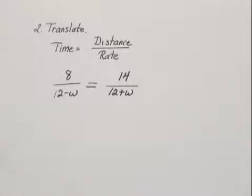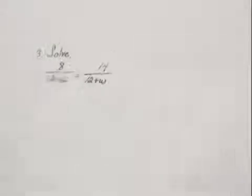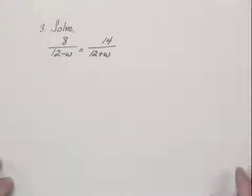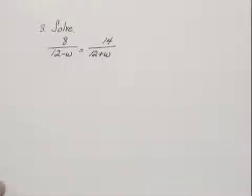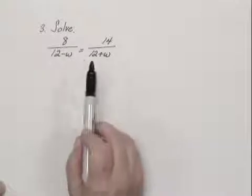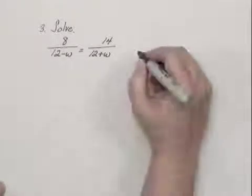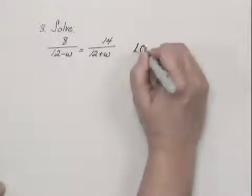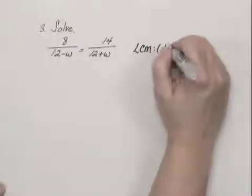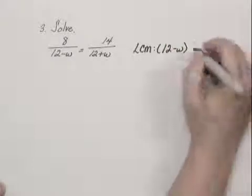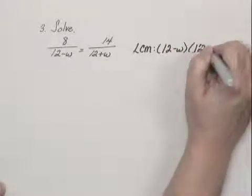So now we have an equation that we can solve. 8 divided by 12 minus w equals 14 divided by 12 plus w. Whenever we have a rational equation, we want to first clear the fractions, multiplying both sides of the equation by the least common multiple, which in this case is 12 minus w times 12 plus w.